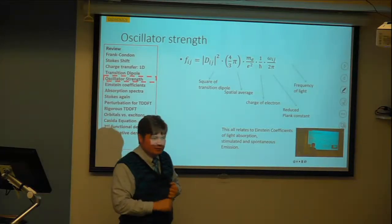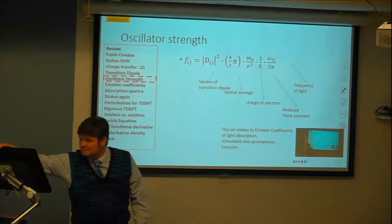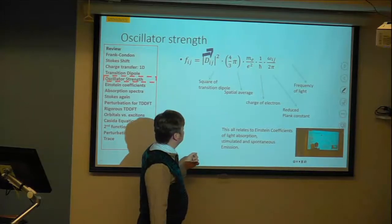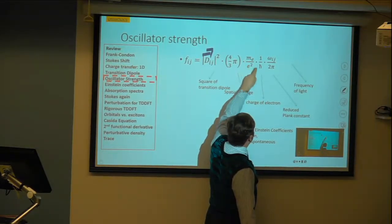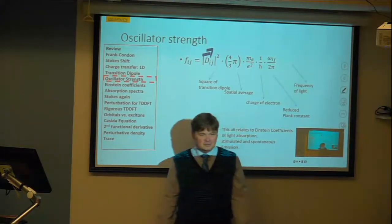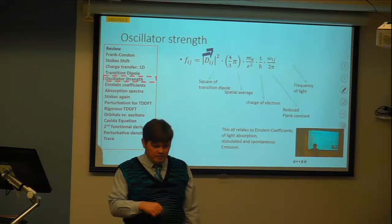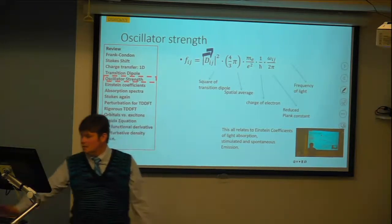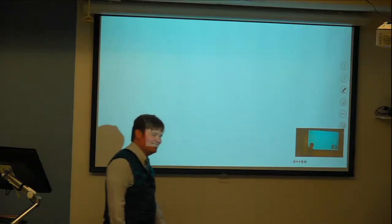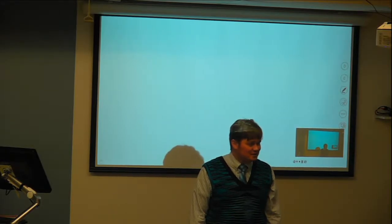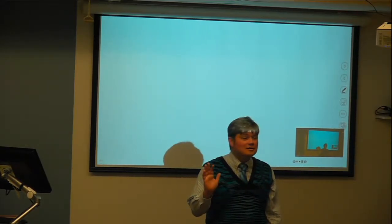TDDFT creates corrections to the absorption spectrum — in transition energy, and in allowing superposition of multiple electron-hole pairs contributing to one excitation. The oscillator strength is proportional to the square of the transition density, multiplied by additional constants including the transition frequency.